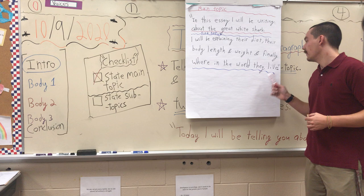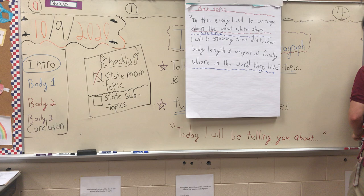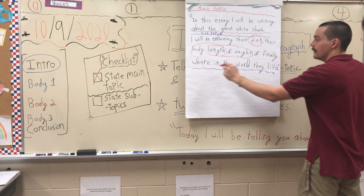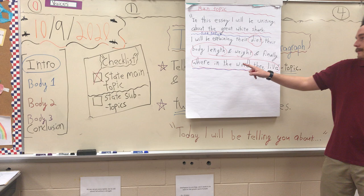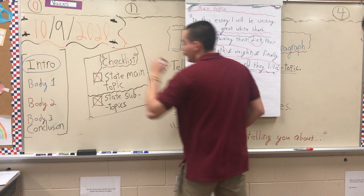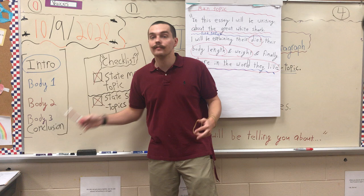Those were my three subtopics. Look where they are, boys and girls. If I go in a circle where I state my main subtopics — I've got diet there, body length plus weight, so that's two subtopics, and then where in the world they live. Subtopic one: diet. Subtopic two: body length and weight. Subtopic three: where in the world they live. I have stated my three subtopics, so I can take 'state subtopics' on my checklist and check it off. And just like that, I am one paragraph out of five away from being done with my essay. Isn't that cool?